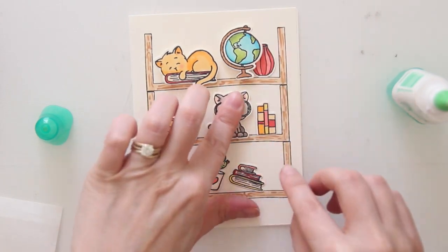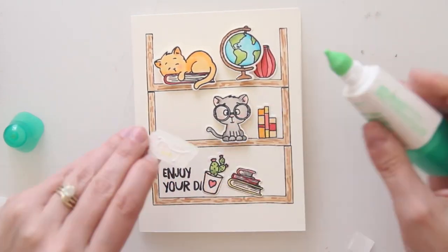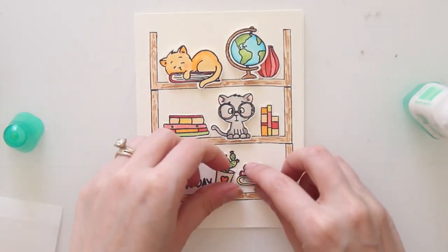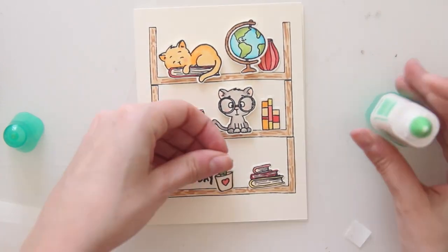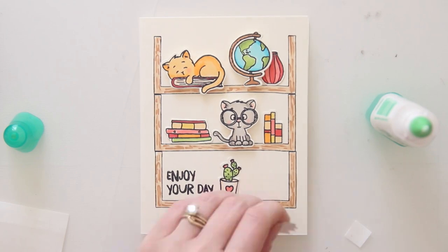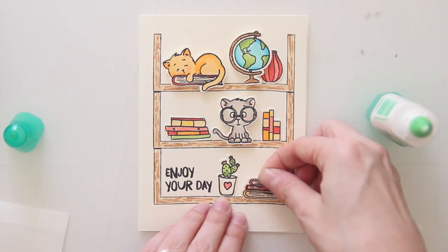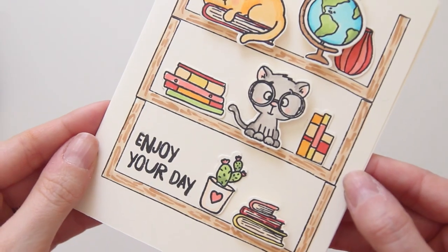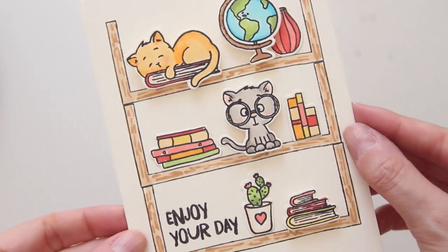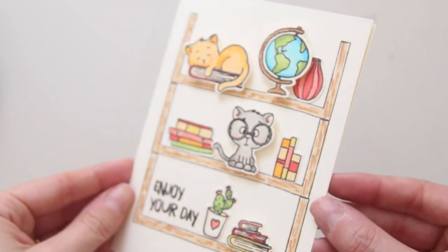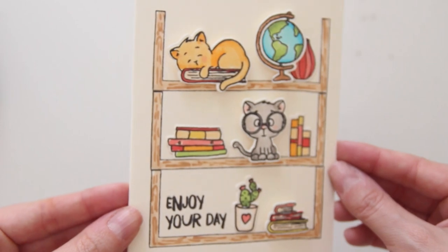Once I'm done adhering everything down this card is finished. I really hope you enjoyed this. I really had fun working with these images and coloring them. Be sure to watch Emily's video to see how she created projects using this stamp set and dies, and be sure to leave a comment below as well as give this video a thumbs up if you enjoyed it. Thanks so much for watching.